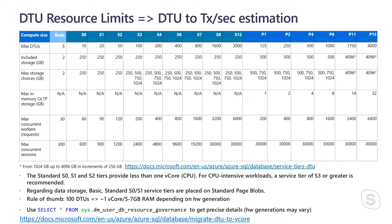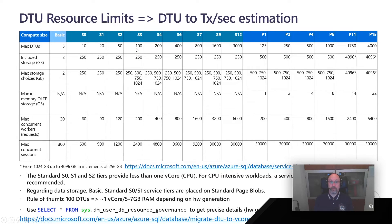For those who need to convert between DTUs and cores, a rule of thumb is that 100 DTUs correspond roughly to one vCore in the vCore model, and between five and seven gigabytes per core depending on the hardware generation. In Azure SQL Database, we also have dynamic management views like dm_user_db_resource_governance, which provide good information about what these DTUs effectively mean in terms of hardware resources.